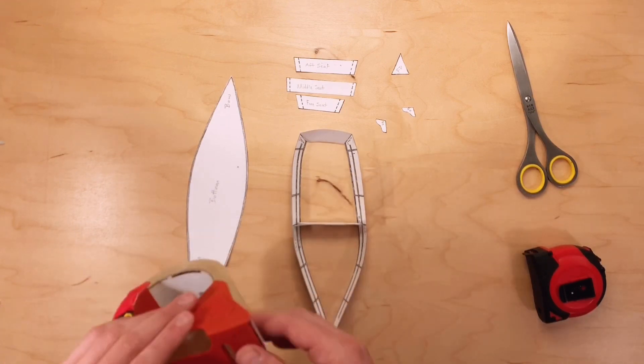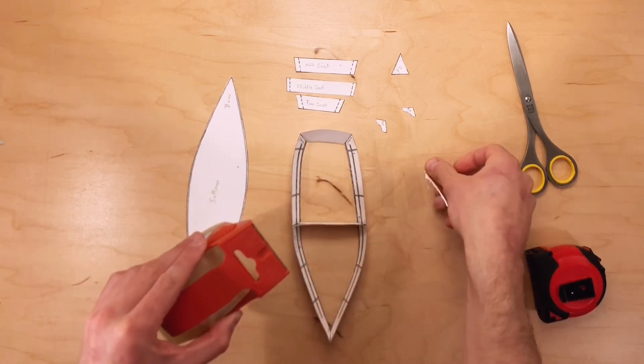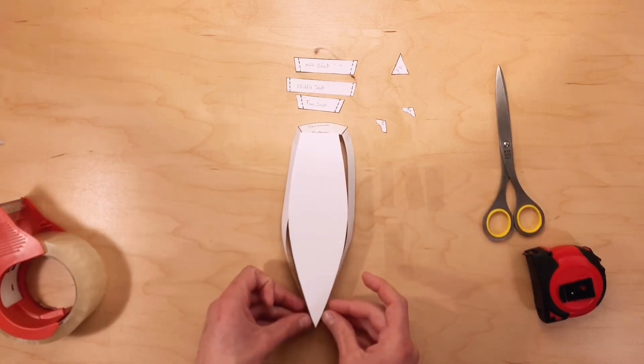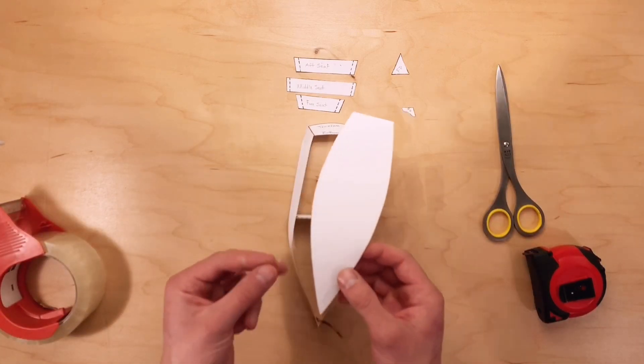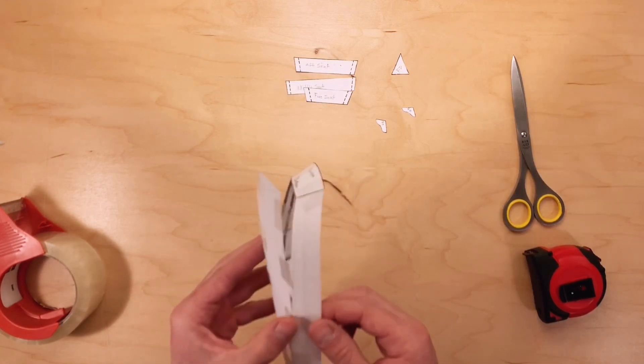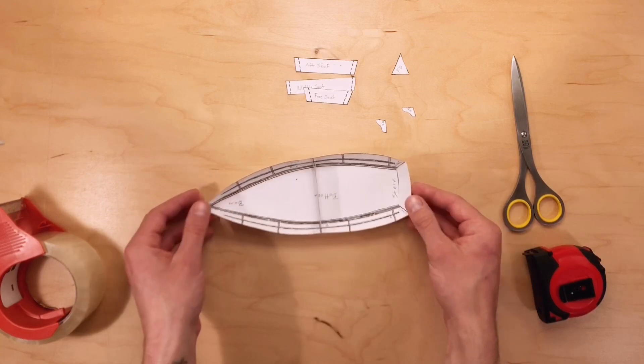Now we need to attach the bottom. In order to do this, I'm going to cut five pieces of tape for each side. Flipping the boat over, we can put the bottom piece in line with the sides. It's starting to look like a boat.